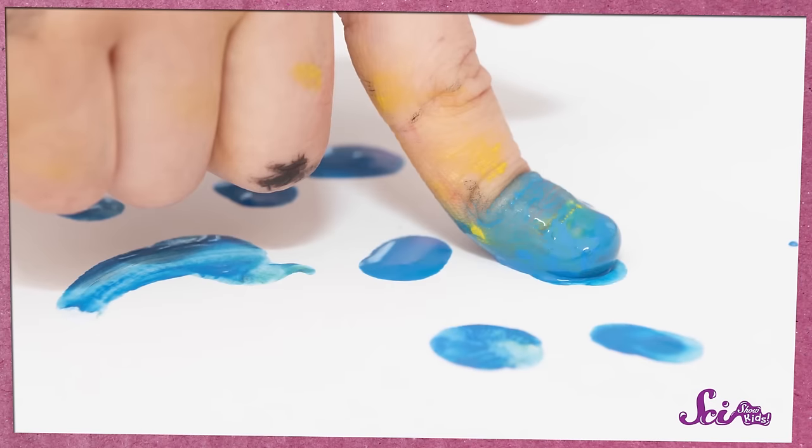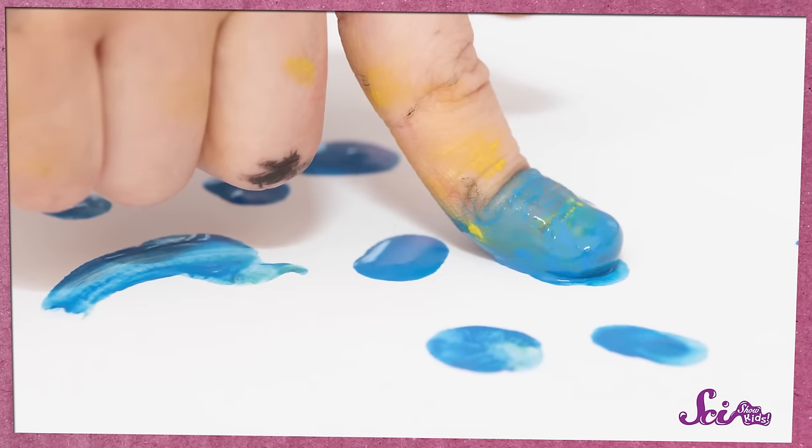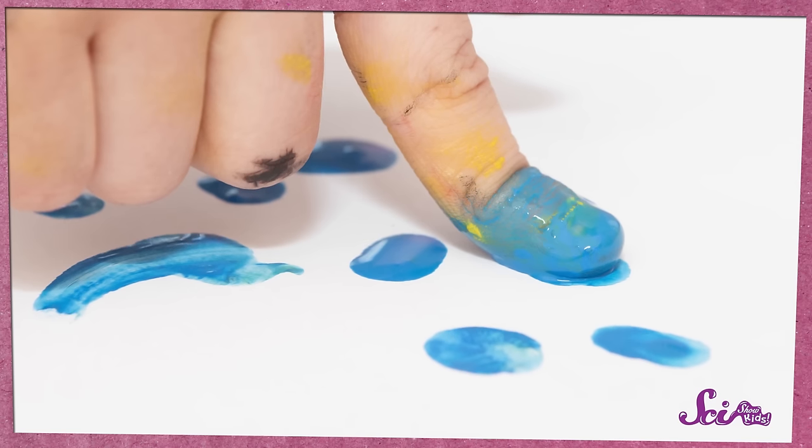But the bumps and ridges also leave marks behind. You might have seen these marks on a mirror or window, or even on paper if you've gotten marker or paint on your fingertips. But we always leave these fingerprint marks, even if we can't see them.